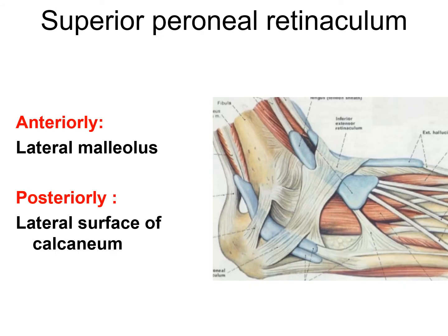Superior peroneal retinaculum is situated behind the lateral malleolus. It is anteriorly attached to the back of the lateral malleolus and posteriorly attached to the lateral surface of the calcaneum. Two tendons of the lateral compartment of the leg, peroneus longus and peroneus brevis, pass deep to it in a single compartment and are covered by a common synovial sheath.